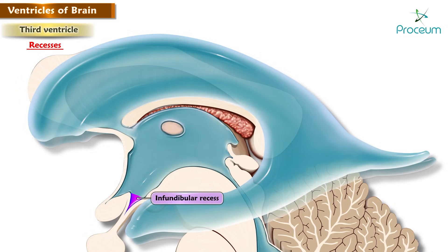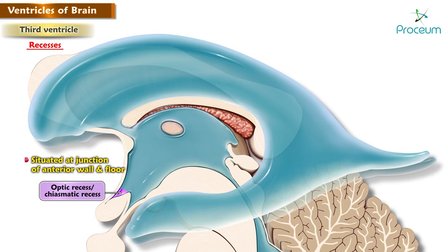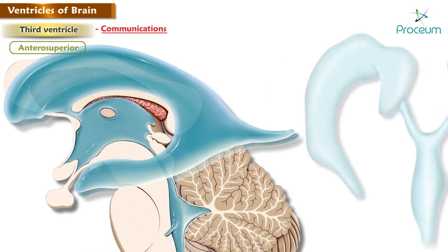The infundibular recess is a diverticulum which extends into the stalk of the pituitary gland. The optic recess, or chiasmatic recess, is situated at the junction of the anterior wall and the floor of the third ventricle, just above the optic chiasma.